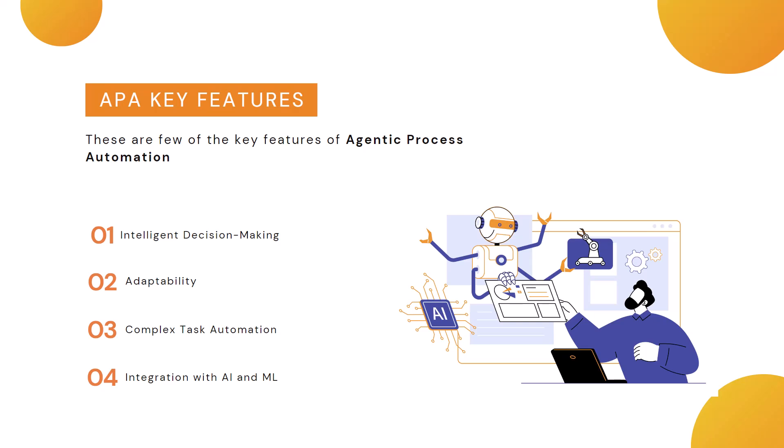Coming to the key features of APA: intelligent decision making, adaptability, complex task automation, and integration with AI and ML — these are a few of the key features.